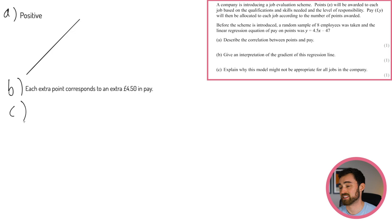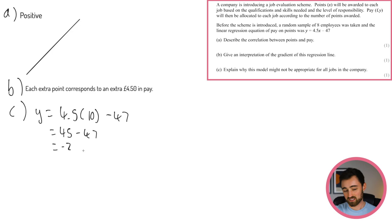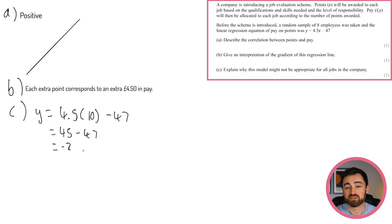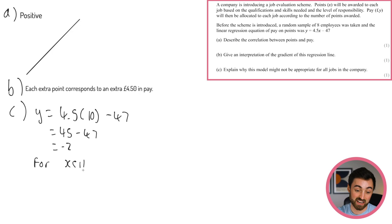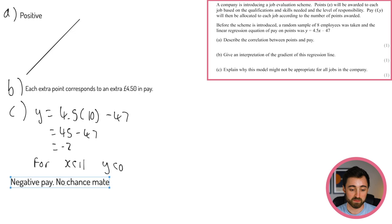Imagine you had 10 points. You'd get y equals 4.5 times 10 minus 47, which is 45 minus 47, giving minus 2. I wouldn't work for negative money. So for x less than 11, you'd have negative pay, which makes no sense. This regression line would only be valid for x greater than 11 — that's why it's not appropriate for jobs with fewer than 11 points.